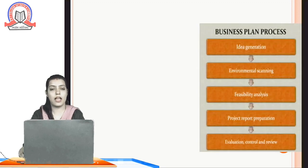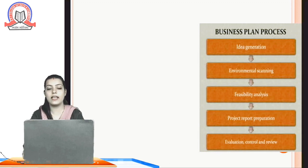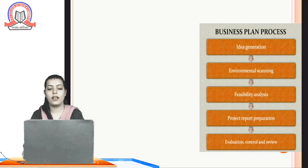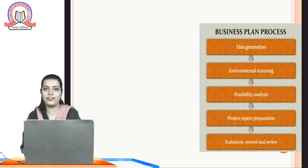There are some steps in the business plan process. First is idea generation — if we have an idea, we generate it and make a plan accordingly. Second is environmental scanning — analyzing the internal and external environment. Third is feasibility analysis. Then project report preparation. And last is evaluation, control, and review.